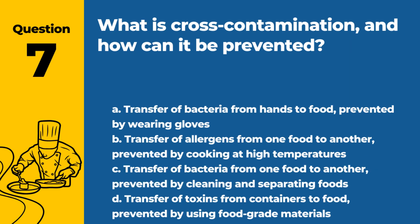Question 7. What is cross-contamination and how can it be prevented? A. Transfer of bacteria from hands to food, prevented by wearing gloves. B. Transfer of allergens from one food to another, prevented by cooking at high temperatures. C. Transfer of bacteria from one food to another, prevented by cleaning and separating foods. D. Transfer of toxins from containers to food, prevented by using food-grade materials. Answer: C. Transfer of bacteria from one food to another, prevented by cleaning and separating foods. Cross-contamination is the transfer of bacteria from one food to another, which can be prevented by proper cleaning and separating foods.